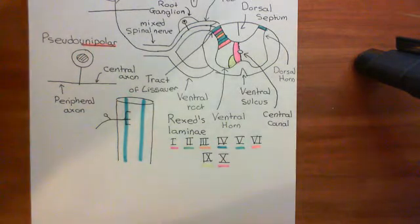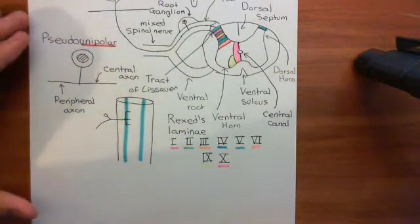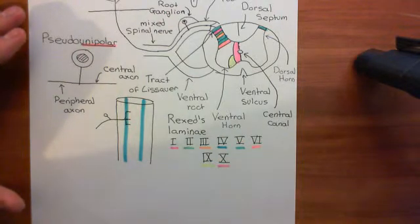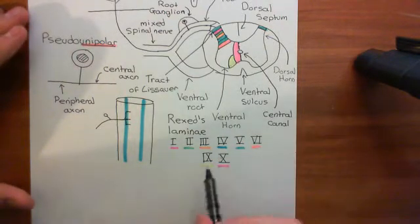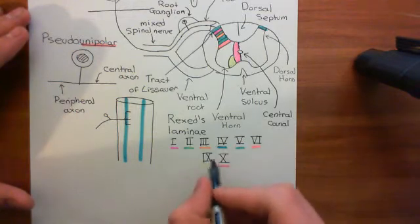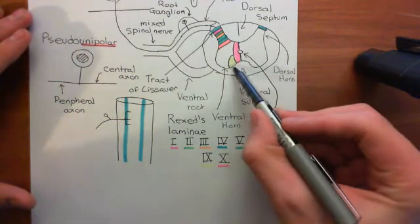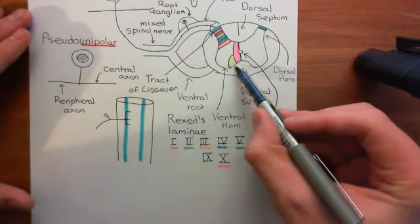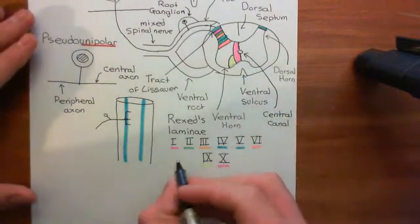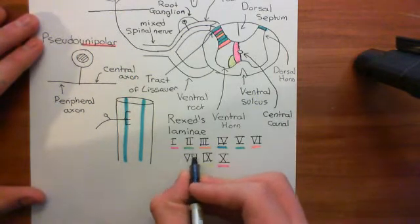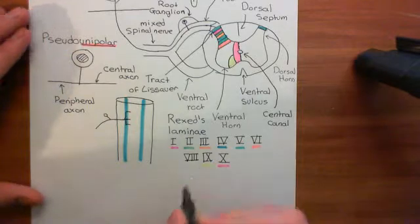Welcome back to this next video in which we are discussing the transduction of painful stimuli. Sorry for the abrupt ending to the previous video - I made a terrible mess and had to cut it all out. Basically, this picture is now wrong because I drew this extra little Rexed lamina here in yellow, and then I said that this was Rexed lamina 9. That is wrong - that one is Rexed lamina 8.